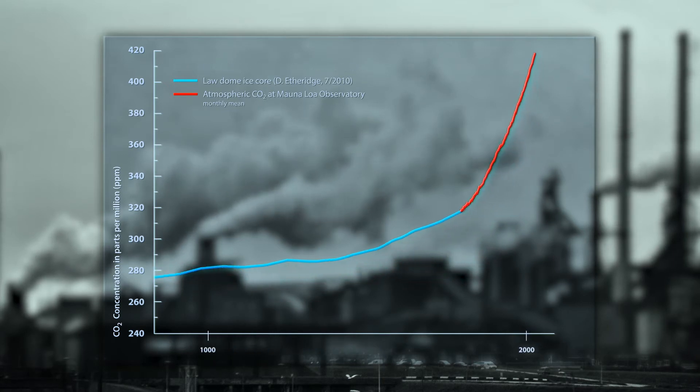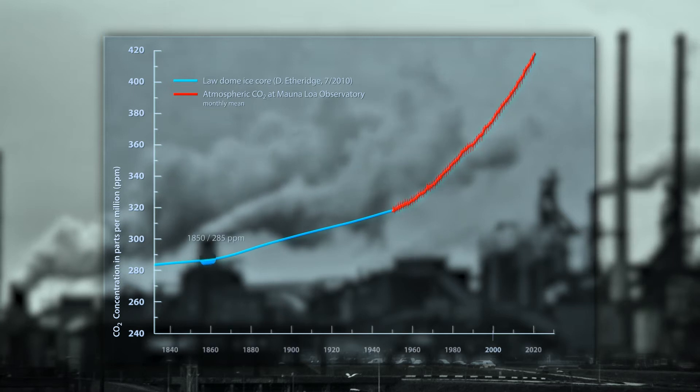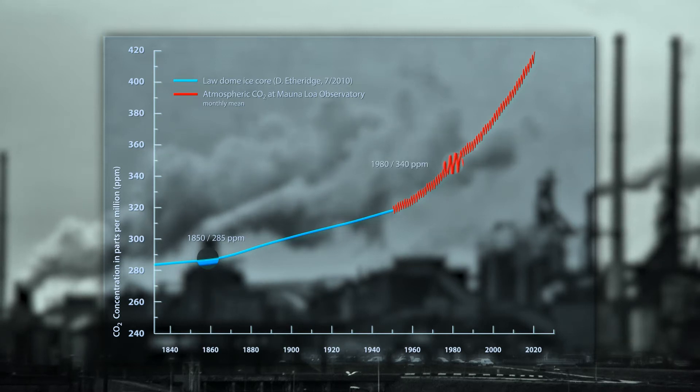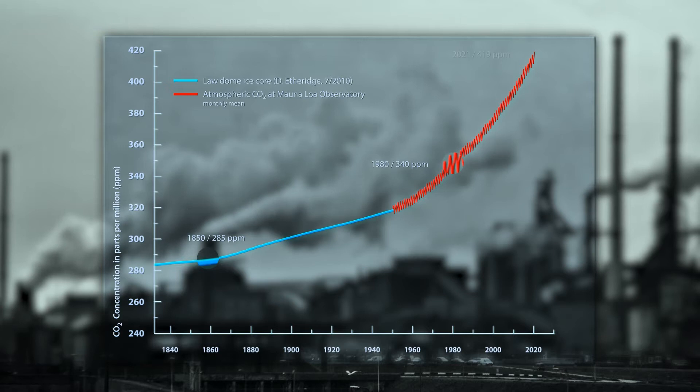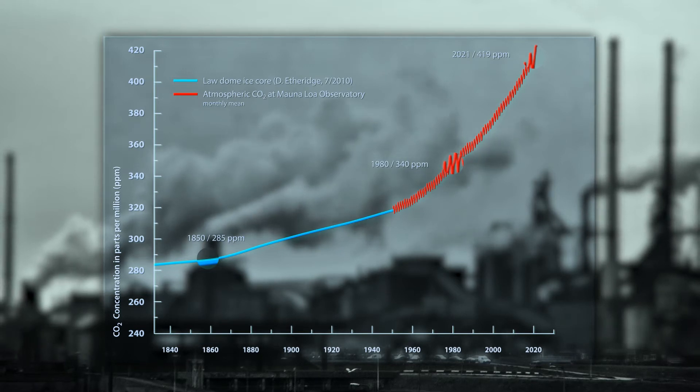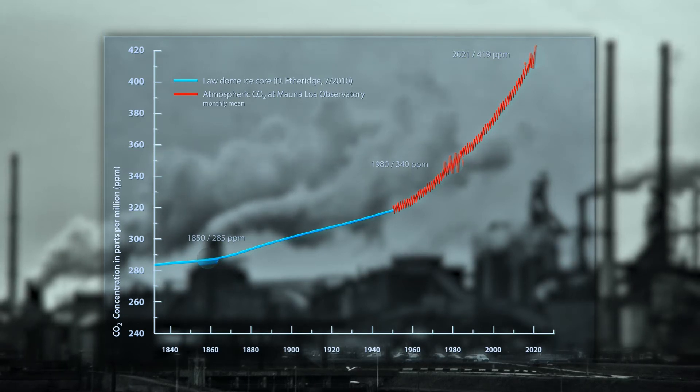From a geological point of view, it increased at a furious pace. The concentration of CO2 was still at 285 parts per million at around 1850. Then it rose to 340 by 1980 and was already at 419 in 2021. More than half of this tremendous rise occurred over the last 40 years.